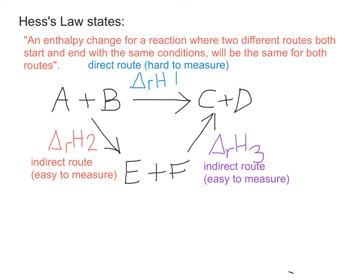So we've now got two possible routes. We've got route 1, which is the direct route from A and B going to C plus D. Or we've got route 2, which goes from A to B through E to F, and then over to C to D. So in other words, delta RH2 plus delta RH3 is going to be the same as delta RH1.